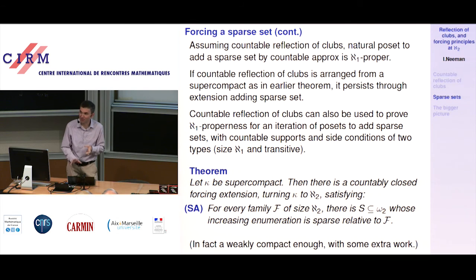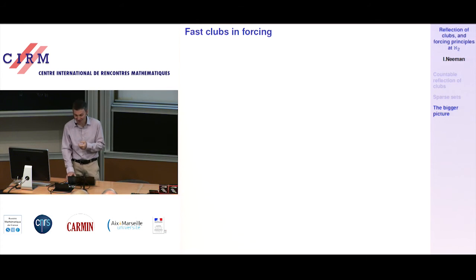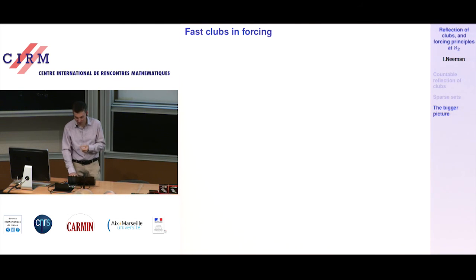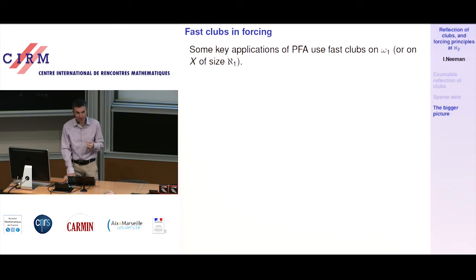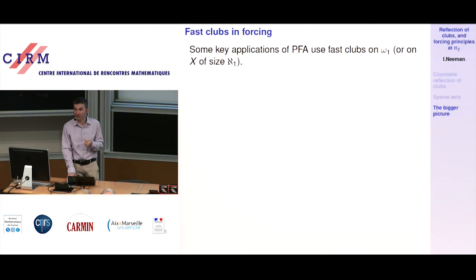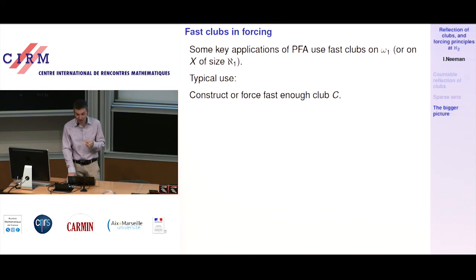Now the big picture — the interesting last part. Why bother to add these sparse sets? This is connected to proper forcing. There are key applications of PFA which use fast clubs on omega_1. The typical way uses fast clubs in connection with PFA: you either construct or force a fast enough club, then define a poset whose conditions are finite and are separated by elements of C. Between any two points in the condition you separate them with some element of C.